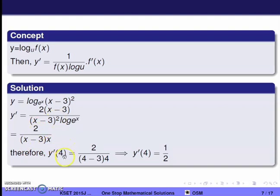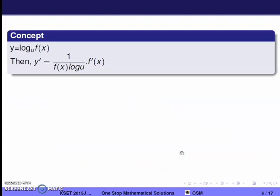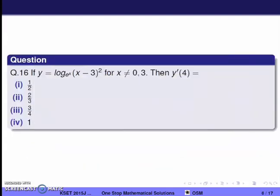Therefore y'(4) at x = 4 is equal to 2 / [(4−3)·4] = 2/4 = 1/2. The correct option is 1/2.